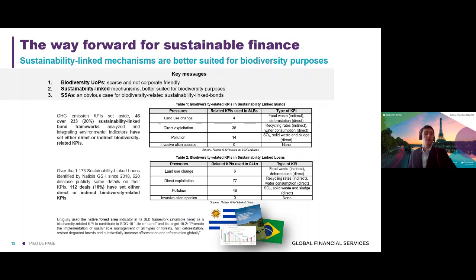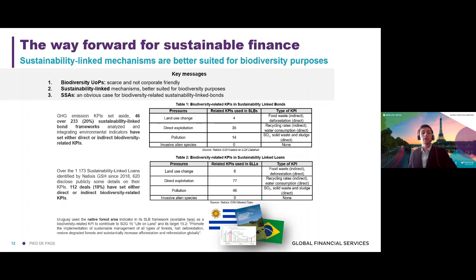For SSAs, it may be simpler to identify biodiversity expenses. France, with its OAT green bond, has targeted quite a lot of expenditures related to biodiversity. There is also an obvious case for biodiversity-related sustainability-linked bonds for SSAs, particularly when it comes to deforestation. We can think about Brazil, Uruguay, and other countries which could use such KPIs in sustainability-linked bond frameworks.